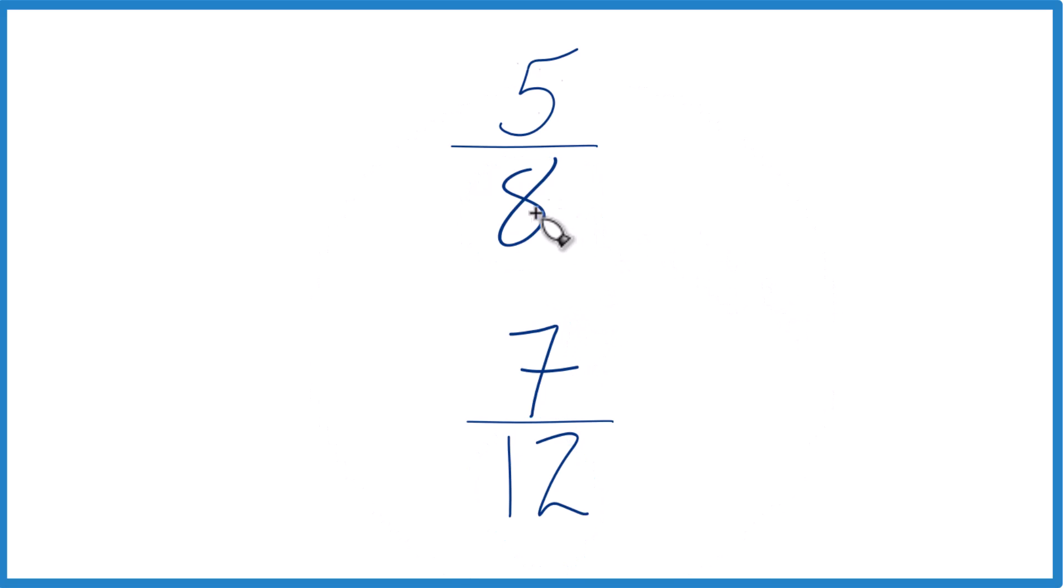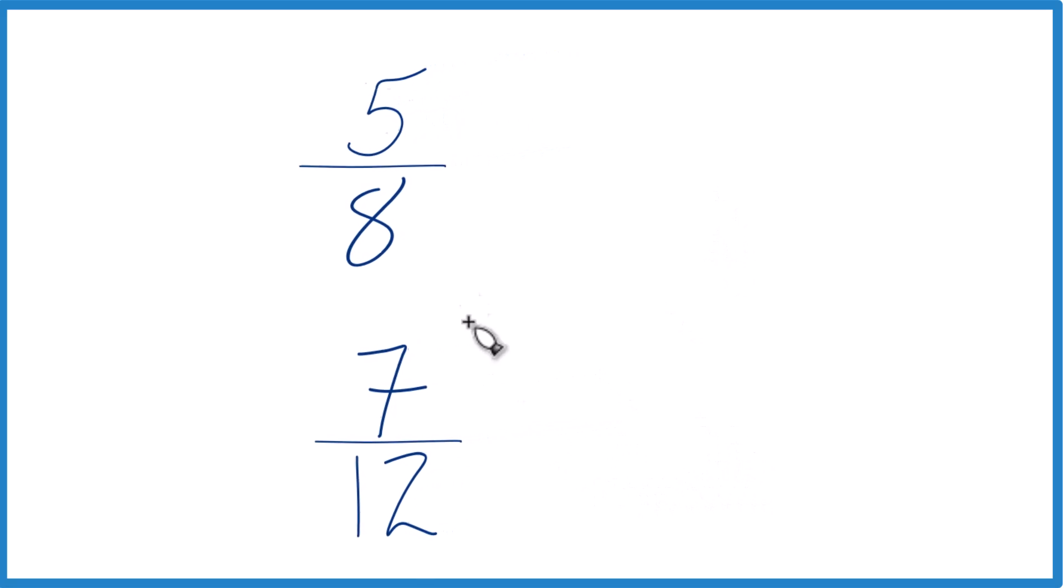8 times 3 equals 24, and then down here, 12 times 2 equals 24. So now we have the same denominator.